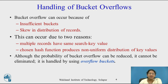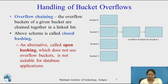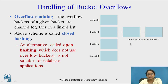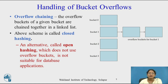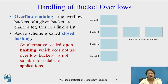We cannot eliminate bucket overflow; we try to minimize it. There are two ways to handle bucket overflow. First, overflow chaining — the overflow buckets of a given bucket are chained together in a linked list, meaning extra buckets are attached to handle overflow. This scheme is called closed hashing. An alternative scheme called open hashing does not use overflow buckets, and it is not suitable for database applications.